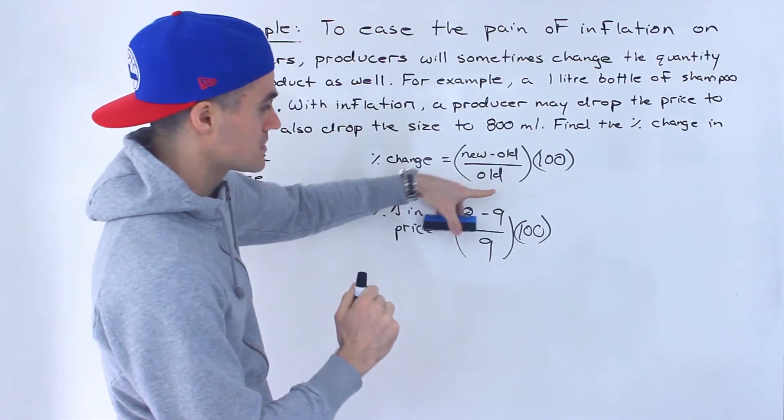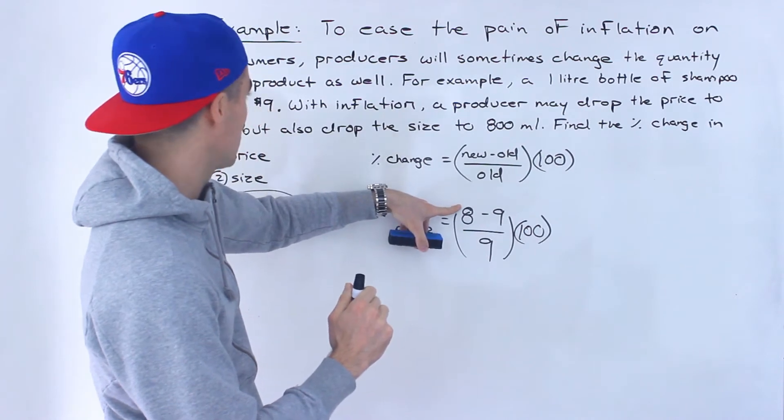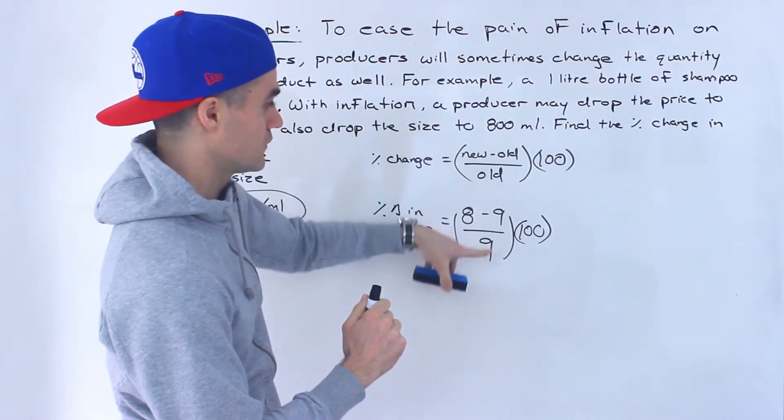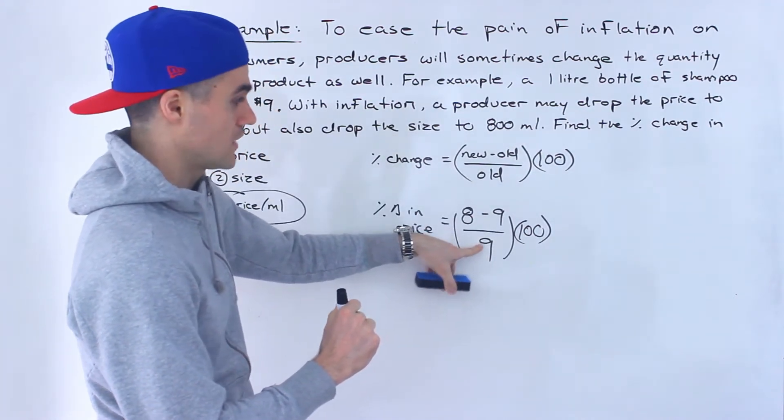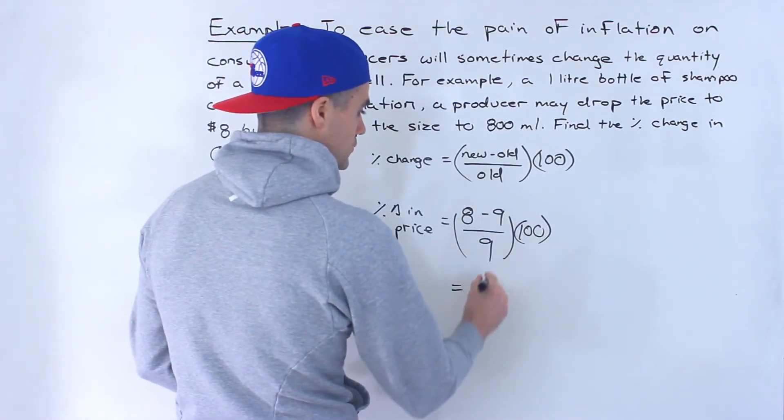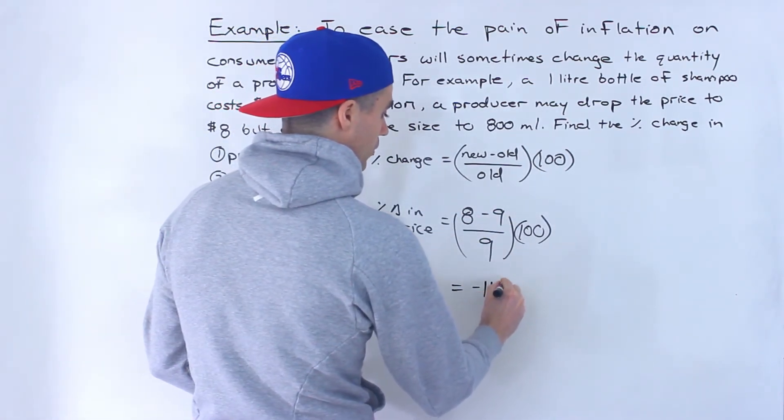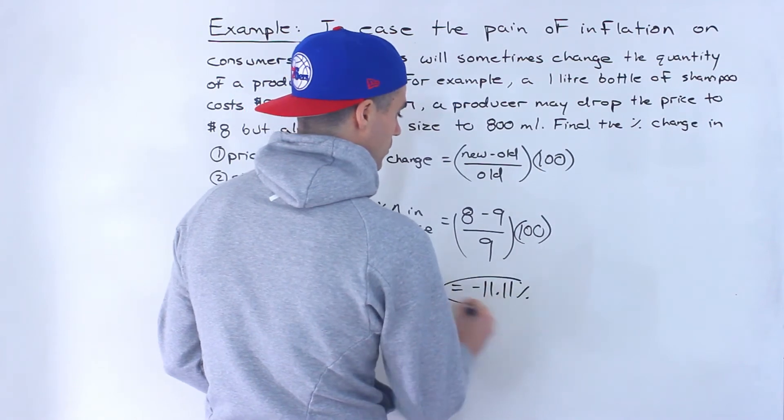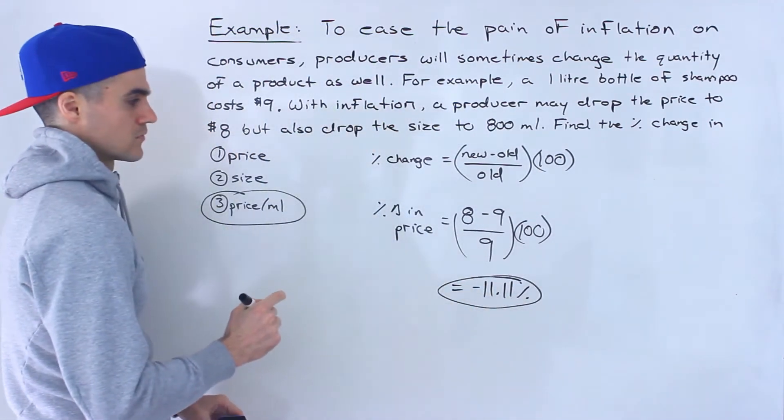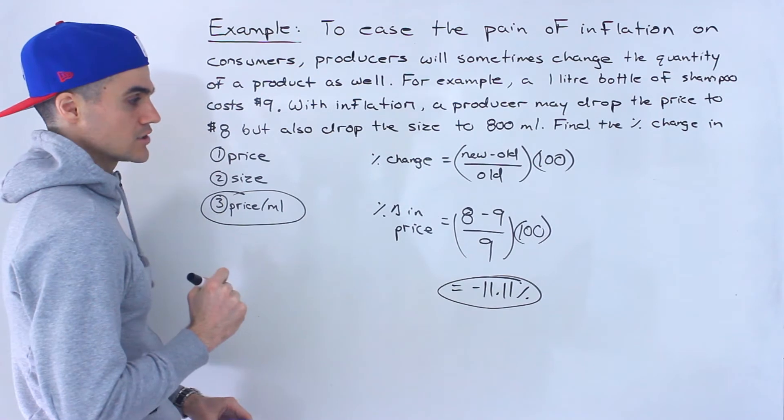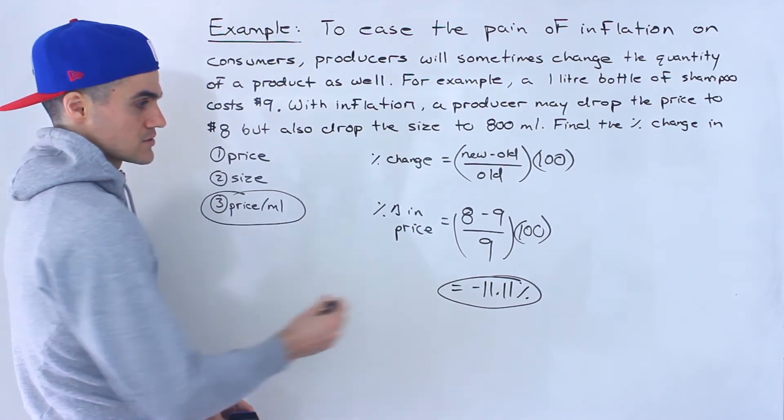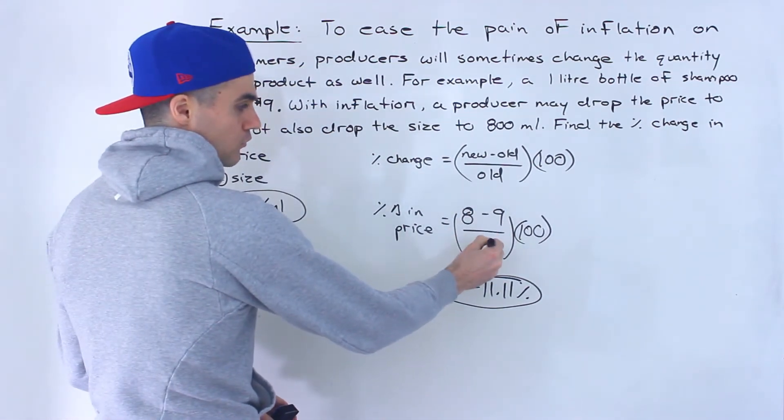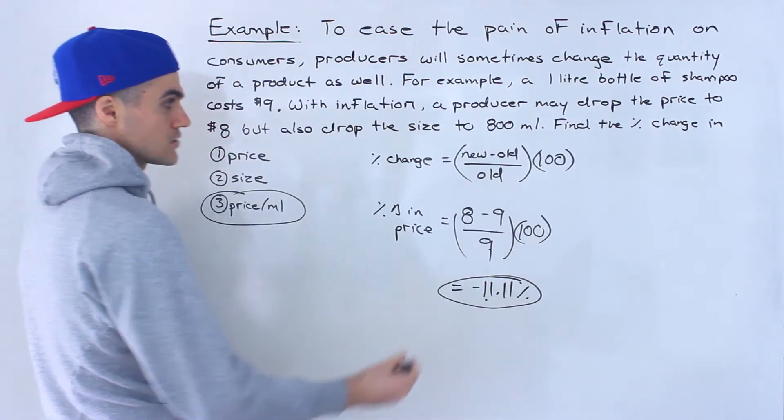We got the new price, which is $8 minus the old price of nine divided by the old price of nine multiplied by 100. And when you do this, you would get negative 11.11%. So that's the change in price right there.